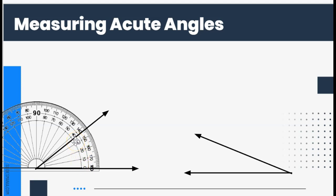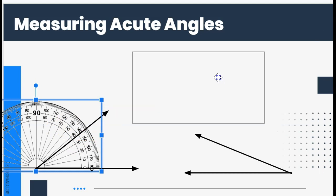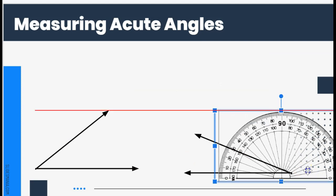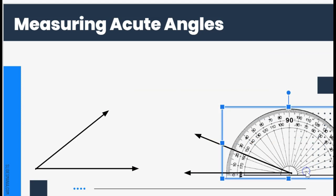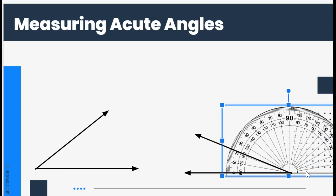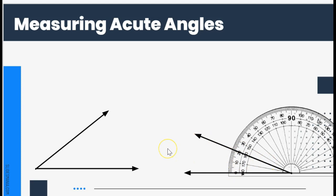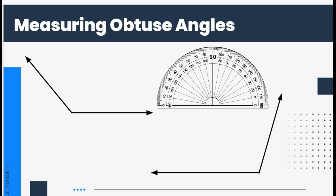This angle measures at about 36 degrees. If my angle is facing in the other direction, I put my protractor on top, make sure it's right at the vertex, and use the outside numbers instead. This acute angle measures at 20 degrees.